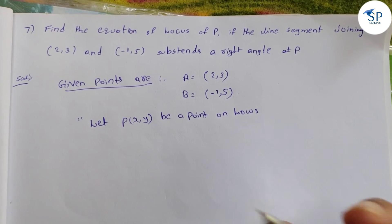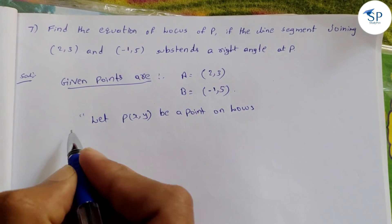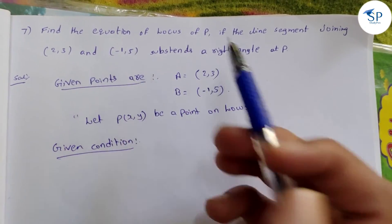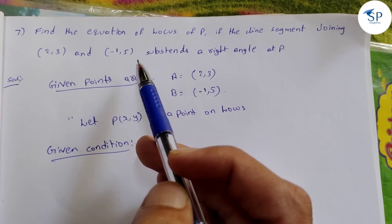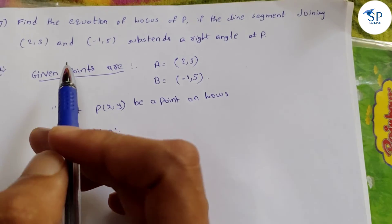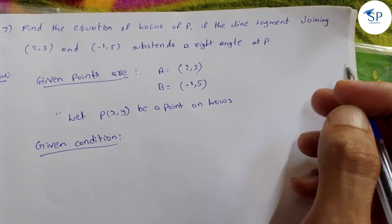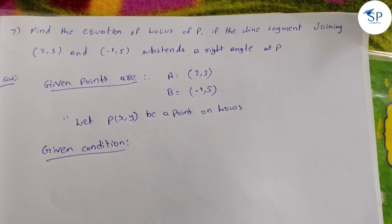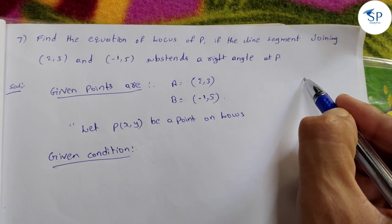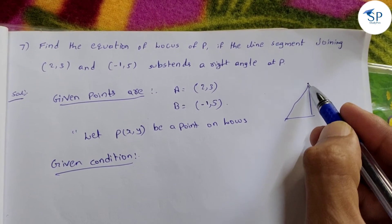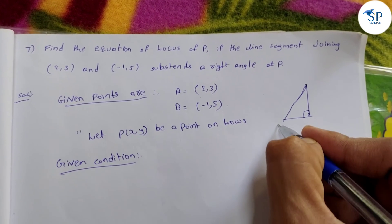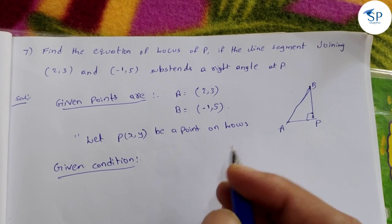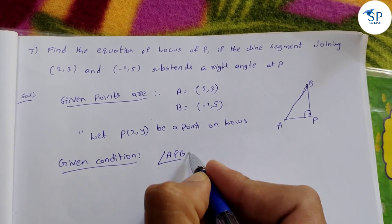So P, and then the given condition: if the line segment joining (2,3) and (-1,5) subtends a right angle at P. So if we have two points A and B, and the right angle relation — angle APB is equal to 90 degrees.